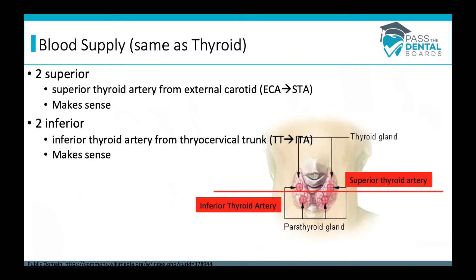The blood supply is pretty easy to remember because it's the same as the thyroid. We've been categorizing the parathyroid glands as two on the right and two on the left, but now we're going to categorize them as the two on the top and the two on the bottom. The two on the top are going to be supplied by the superior thyroid artery, which is the first branch off of the external carotid artery. The two inferior parathyroid glands are supplied by the inferior thyroid artery, which is a branch off of the thyrocervical trunk.